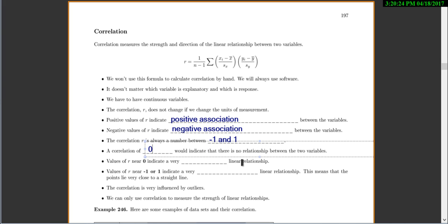Now if you get a correlation of 0, that would indicate that there's no relationship between your two variables. And if you get values of R close to 0, then that means you have a very weak linear relationship. But if you get values of R close to negative 1 or positive 1, that indicates a very strong relationship. And so points close to negative 1 or positive 1 means that you're very close to a straight line.